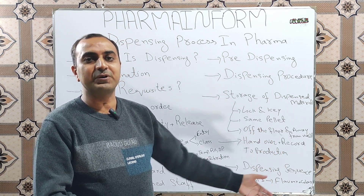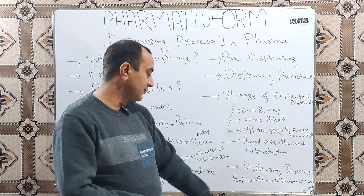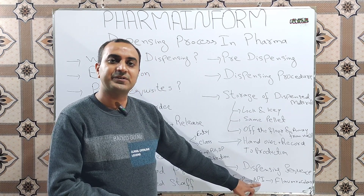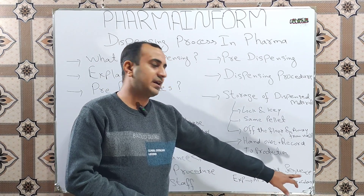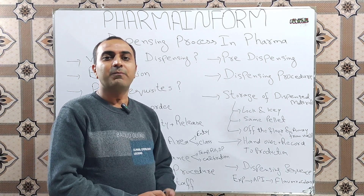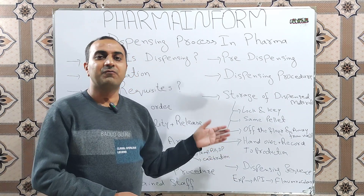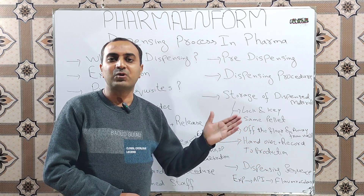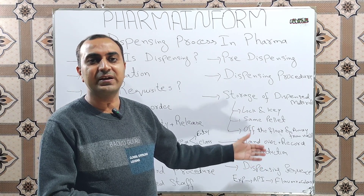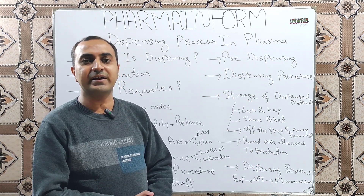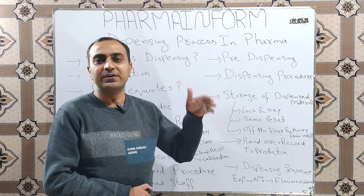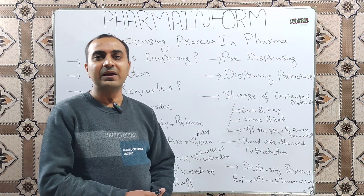The dispensing sequence is a very critical and important question: should we dispense the API first or the excipients first? A good dispensing sequence is: first dispense excipients, then the active pharmaceutical ingredients, then flavor, and then color. The logic is that if we dispense excipients first, their particles may remain suspended in the dispensing area, but since excipients are inert, when we later dispense the API, these excipient particles will settle down in the API container.